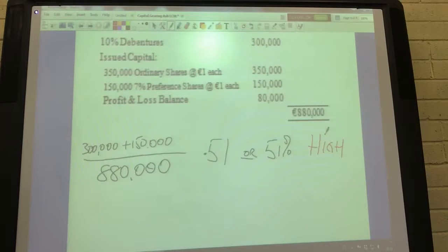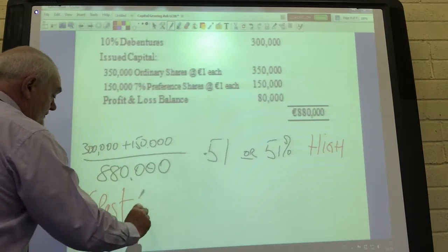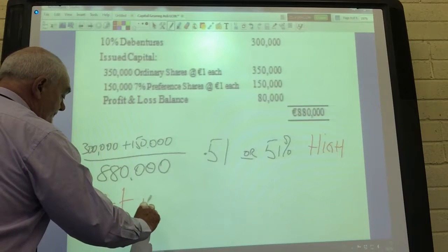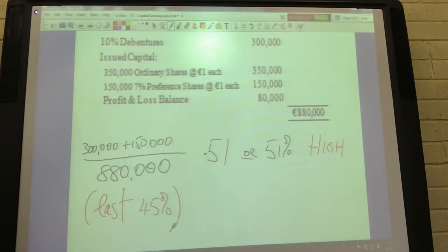51 percent of Ash Limited capital employed comes from fixed return capital. Last year it was 45 percent or 0.45, so that's looked on as an unfavorable trend.